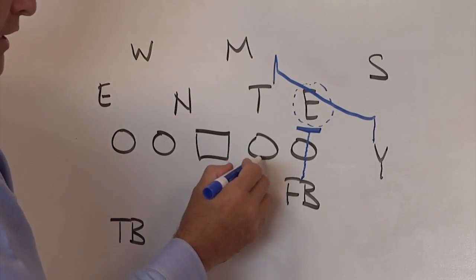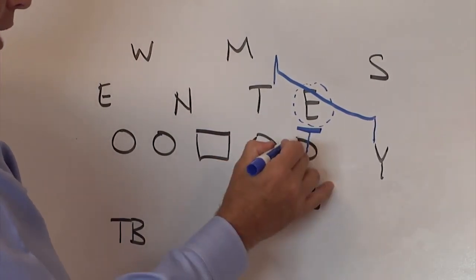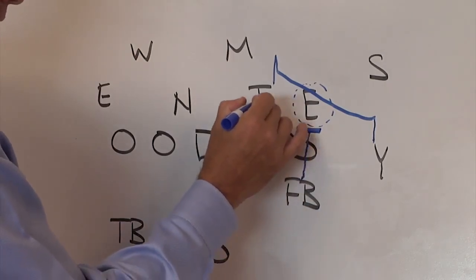The onside guard is pulling, so he is going to step back and pull. Our right tackle is going to block down and aim high.